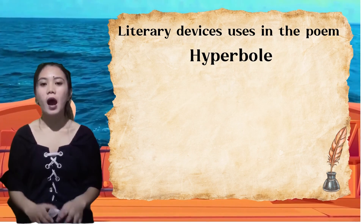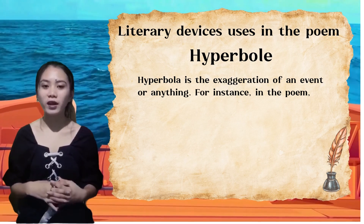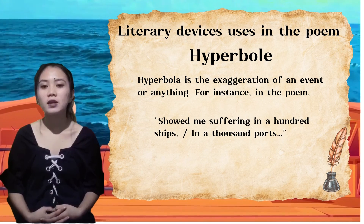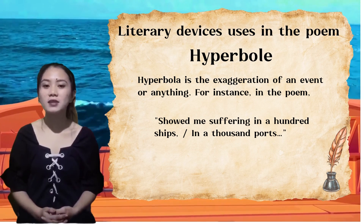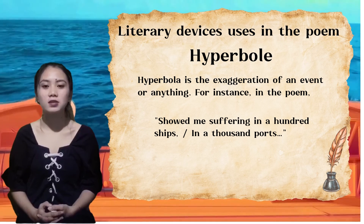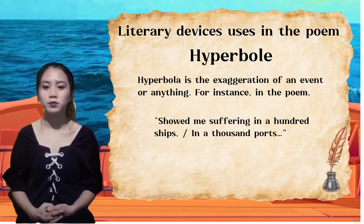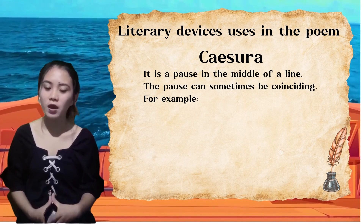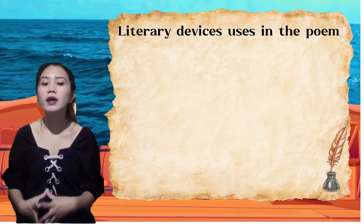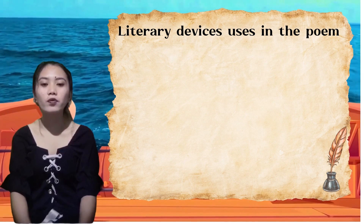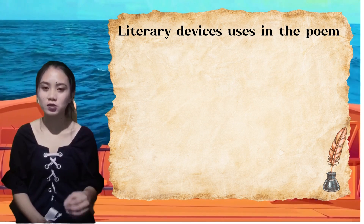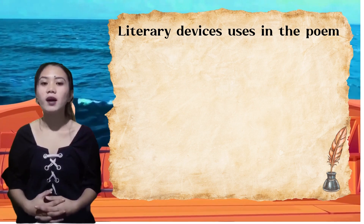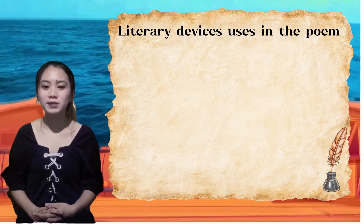Next is Hyperbole — the exaggeration of an event or anything. For instance, in the poem: 'showed me suffering in a hundred ships, in a thousand parts.' The speaker describes his experiences as a seafarer in a dreadful and prolonged tone. Next is Caesura — a pause in the middle of a line. For example: 'for a soul overflowing with sin, and nothing hidden on earth rises to heaven.' The pause stresses the meaninglessness of material possessions and the way God's judgment will be unaffected by the wealth one possesses on earth.